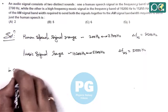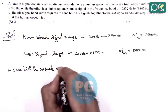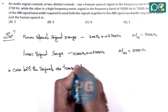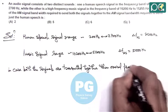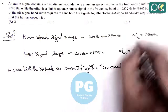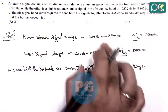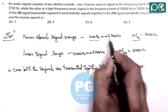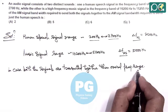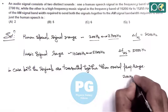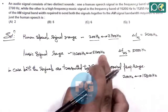In the case where both signals are transmitted together, the overall frequency range will span from the lowest to the highest frequency. The transmission bandwidth is double the modulation frequency; however, here we use the full range from the lower side to the upper side. So for both signals transmitted together, the range is from 200 Hz to 15200 Hz.